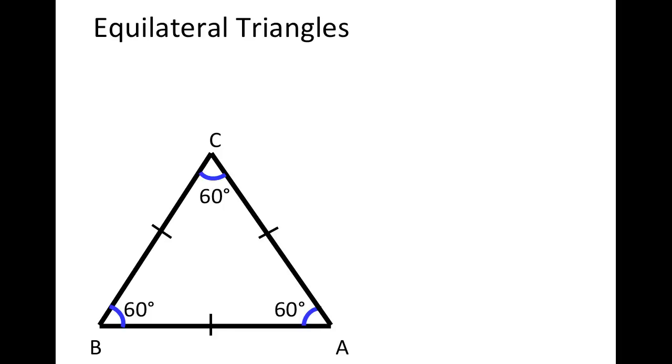A couple of things come from this about equilateral triangles. If a triangle is equilateral, then it must be equiangular. And also, if a triangle is equiangular, then it's equilateral. So if the three angles are all 60 degrees, then the three sides must be the same. And if the three sides are the same, then the three angles must be the same as well.